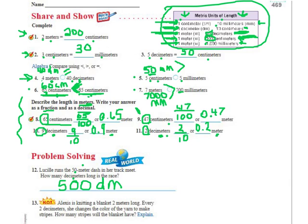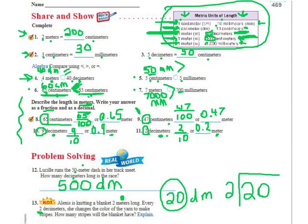The hot question — Alexis is knitting a blanket 2 meters long. Every 2 decimeters, she changes the color of yarn to make stripes. How many stripes will it have? First, we change the meters into decimeters. From the chart, I multiply by 10, so 2 times 10 is 20. She is knitting a blanket that's 20 decimeters long. Every 2 decimeters she changes color, so that's 20 divided by 2. 2 fits into 20 ten times, so it's going to have 10 stripes.